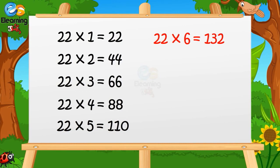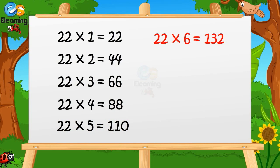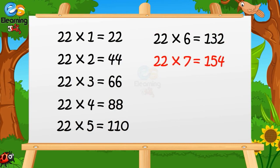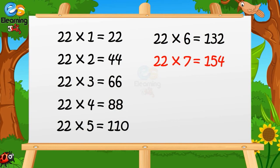22 × 6 is 132. 22 × 6 is 132. 22 × 7 is 154. 22 × 7 is 154.